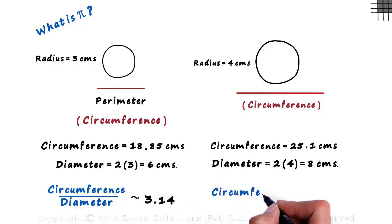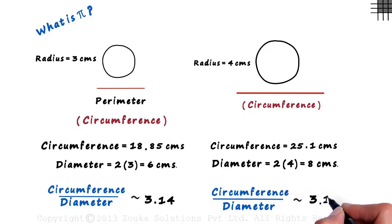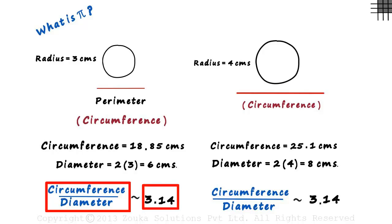What do you think will be the value of circumference by diameter in the second case? Guess what? It will be the same. Approximately 3.14 again. No matter which circle you look at, this value of the circumference by the diameter will always be approximately equal to this value.